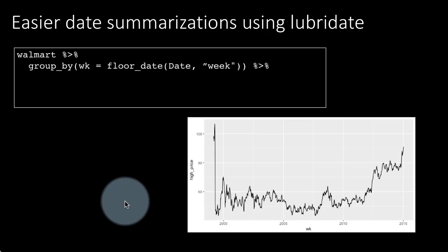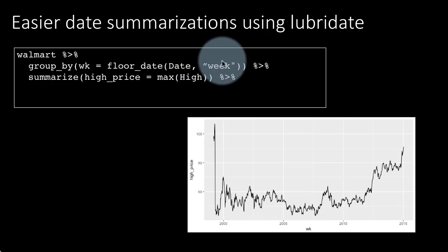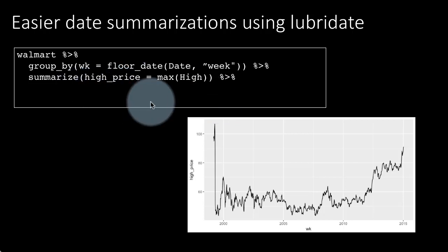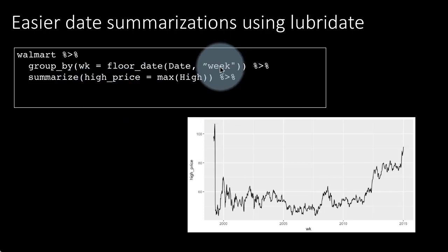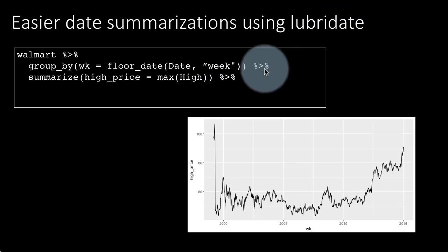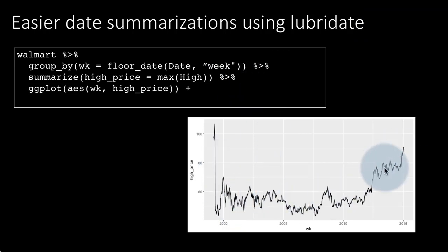Here we are doing floor_date by week — every date of a particular week gets converted to the first date of that week. This is something we would not have been able to do with the earlier approach, but lubridate understands dates very well and therefore you can even do summarizations by week. This is a plot of the weekly high prices for the Walmart stock.